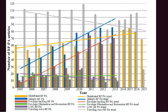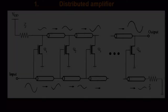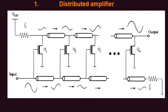So let's get started with each one of these one by one. First we will start with distributed and traveling wave RFPA, and then we will go to Doherty, envelope tracking, EER, and LINC RFPA.